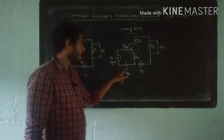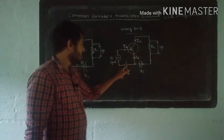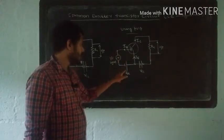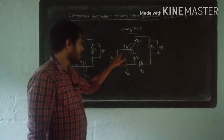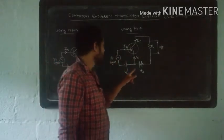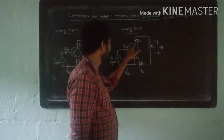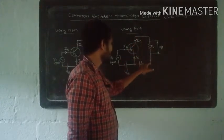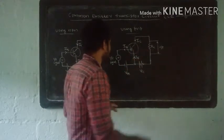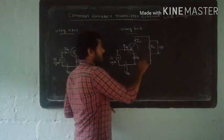For the PNP transistor, emitter is positive, base is negative — associated with the battery negative. The base-emitter junction is forward biased by VBB power supply. The collector is PNP, positive to negative, giving reverse bias. So we have reverse bias.